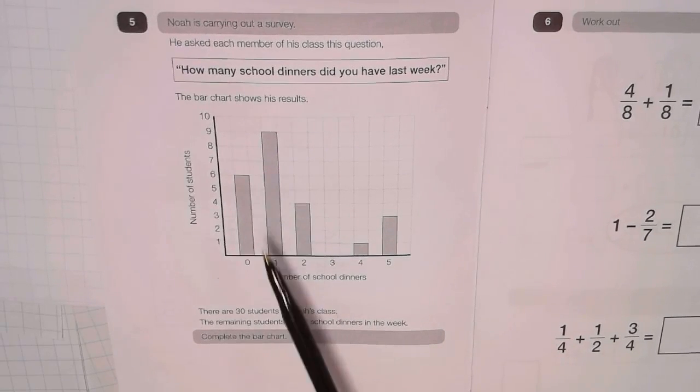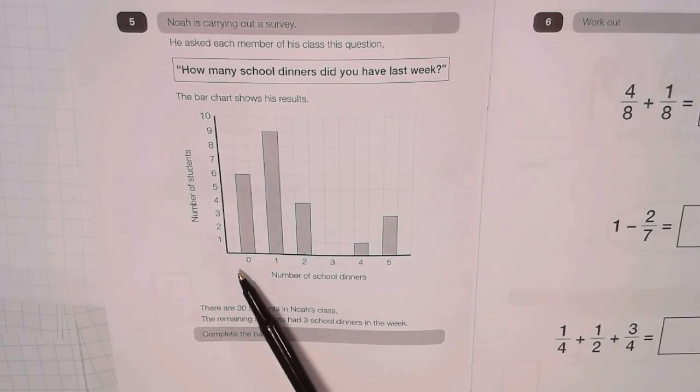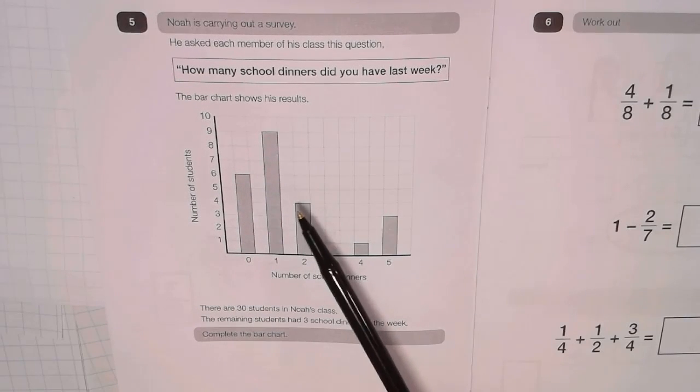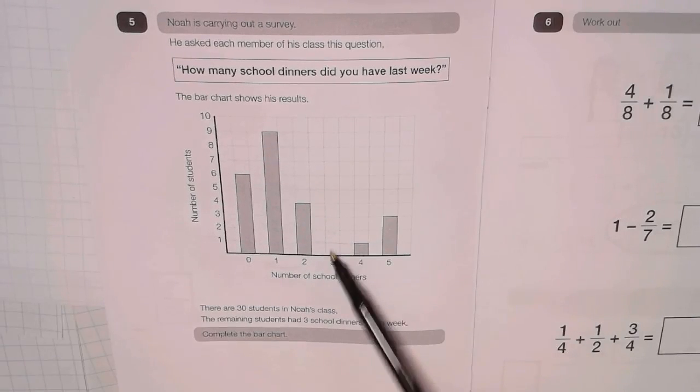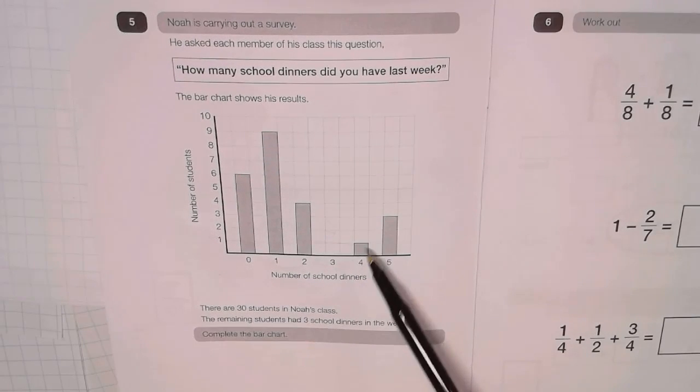So there were 6 students who didn't have any school dinners last week, 9 who'd had 1, 4 who'd had 2 and so on, 0 who'd had - well, we don't know this yet - 1 who'd had 4 and 3 who'd had 5.